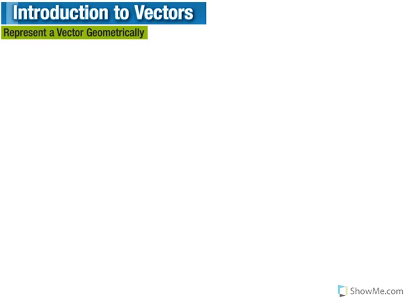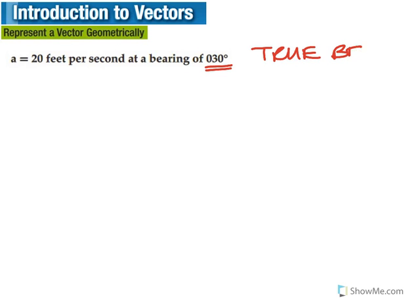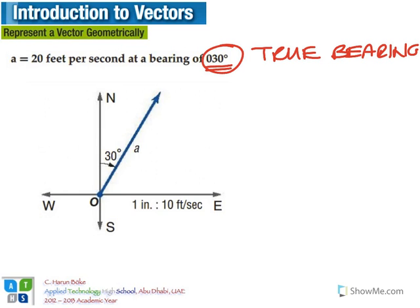Here we have vector a equals 20 feet per second at a bearing of 30 degrees. This is called a true bearing — we always use three digits for the direction. When we have a true bearing as direction, we draw the vector with the given angle measured from due north in the clockwise direction.